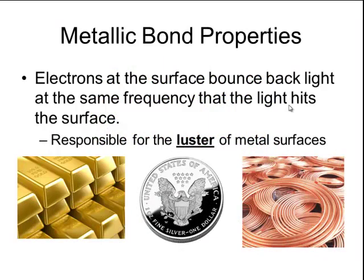Finally, because metals have several different outermost orbitals and there's very little energy difference between them, the electrons can absorb and emit energy over a very wide frequency of light. The electrons at the surface of the metal will bounce back the light at the exact same frequency that the light hits the surface. This reflection of light is responsible for the luster, or shininess, of metal surfaces.